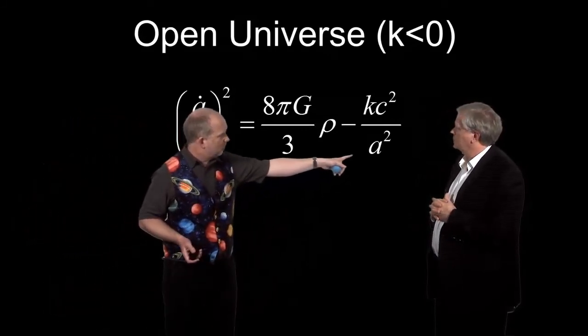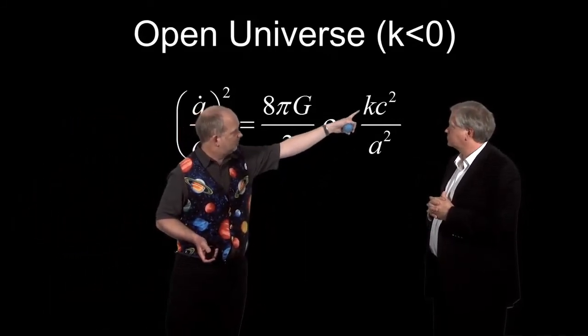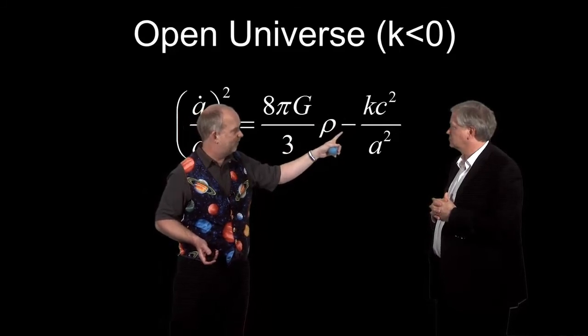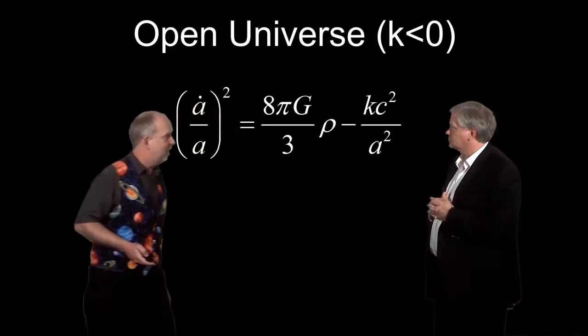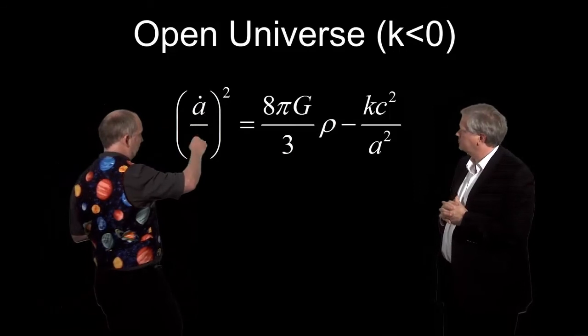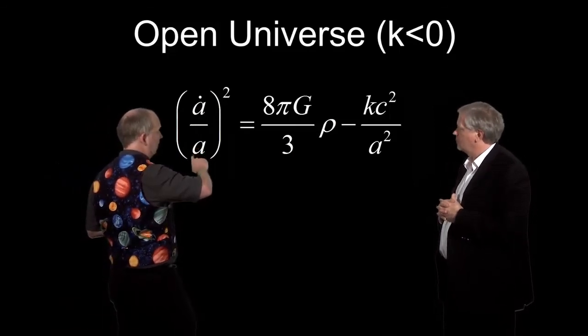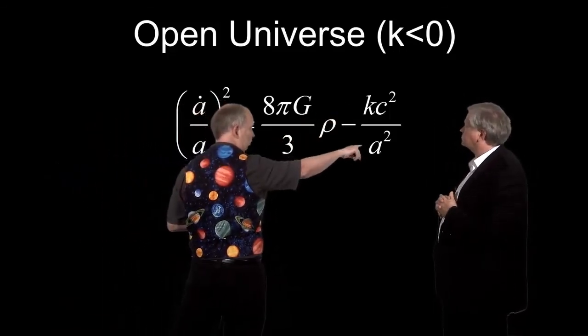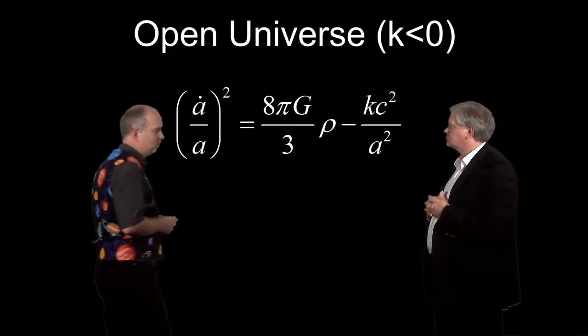Well, in this case, this term is still going to dominate when A gets big enough. But now, because that's negative, there's a minus sign, minus times minus equals plus. So that term over there will be a plus. And we've got A dot over A here, so that means we've got an A squared up there, A squared at the bottom. That's just going to be a constant, Kc squared.